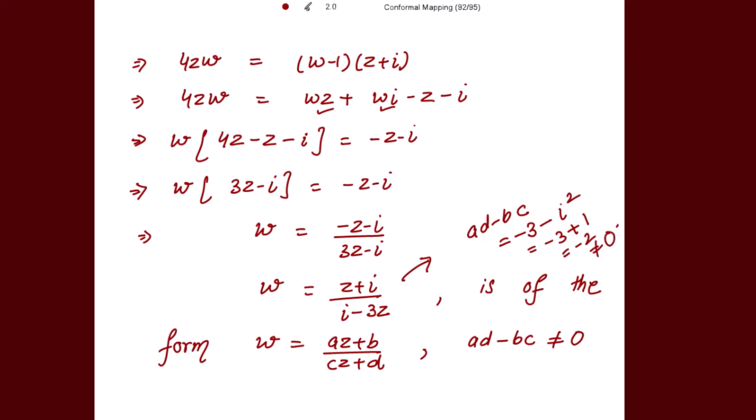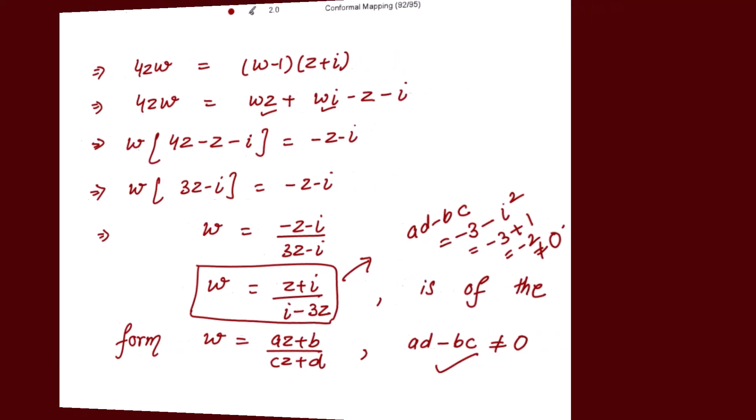Hence the condition is also satisfied for the required bilinear transformation. So w = (z + i)/(i - 3z) is the required bilinear transformation. Thank you.